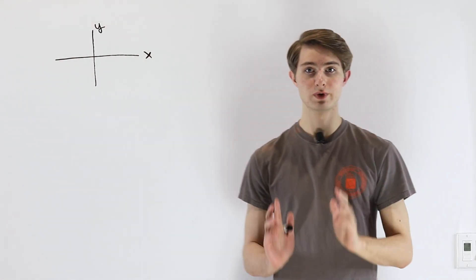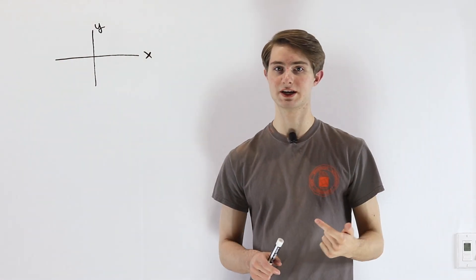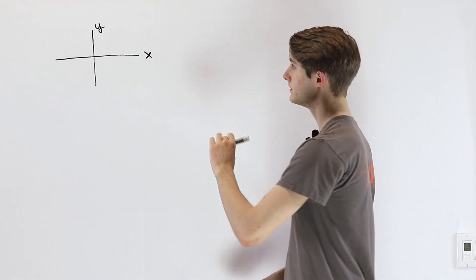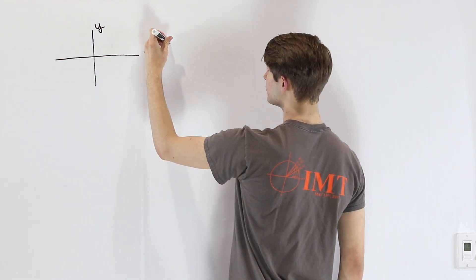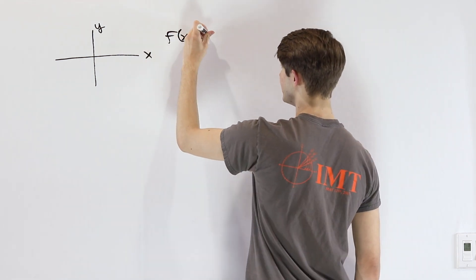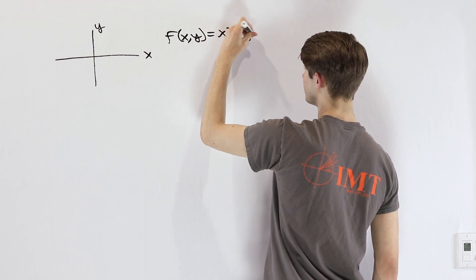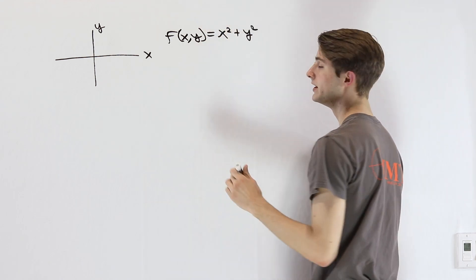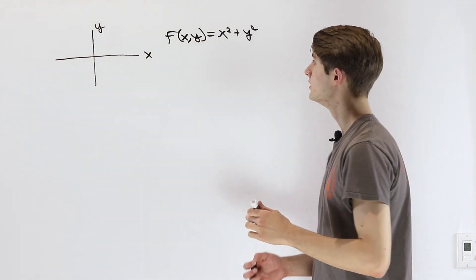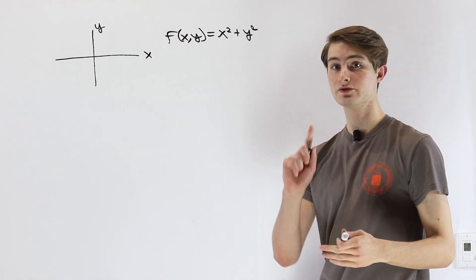We are going to talk about directional derivatives and the gradient vector. The idea of a directional derivative is that when we're looking at an xy plane and we have a function such as f(x,y) = x² + y², which takes in two variables and spits out an output, we want to think about the way that function changes.